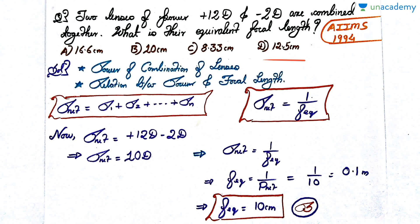I hope you have attempted the question. Here it's a question based on two concepts. The previous one was based on a single concept. You need to know two similar but slightly different concepts. First, you need to know the power of combination of lenses: if two lenses are combined and you know their individual powers, how to calculate the resultant power. Second, you need to know the relation between power and focal length.